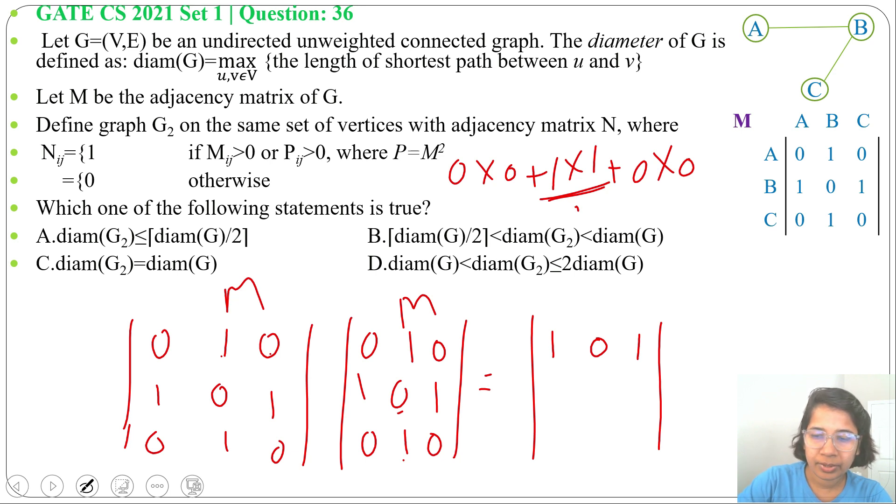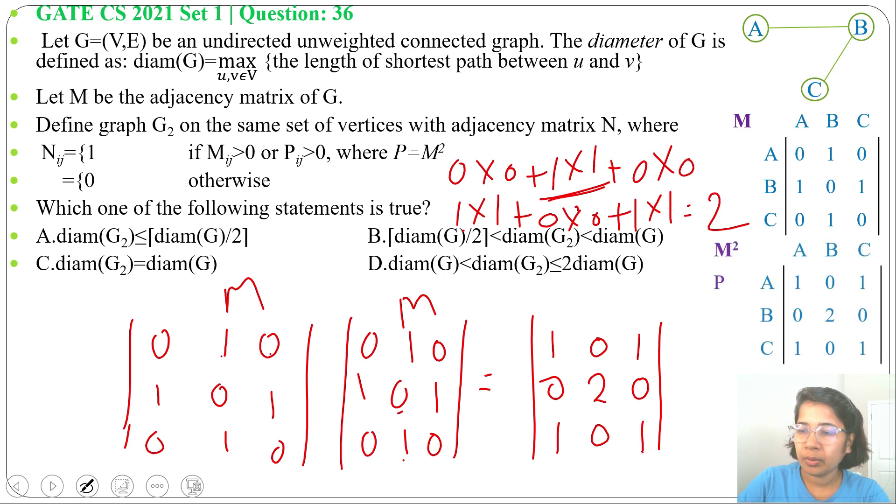Next second row, first column is 0. Second row, second column will be 2. 1 multiplication 1 plus 0 multiplication 0 plus 1 multiplication 1. 1 plus 1 will be 2. Next second row, third column will be 0. Next third row, first column 1. Third row, second column 0. Third row, third column will be 1. So M squared will be 1, 0, 1, 0, 2, 0, 1, 0, 1.